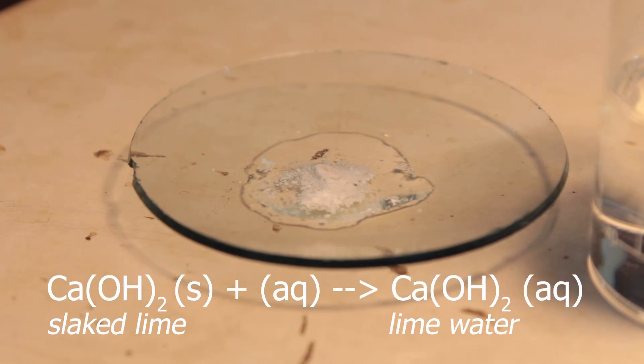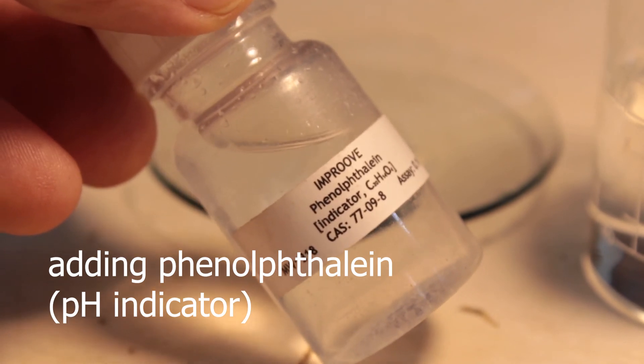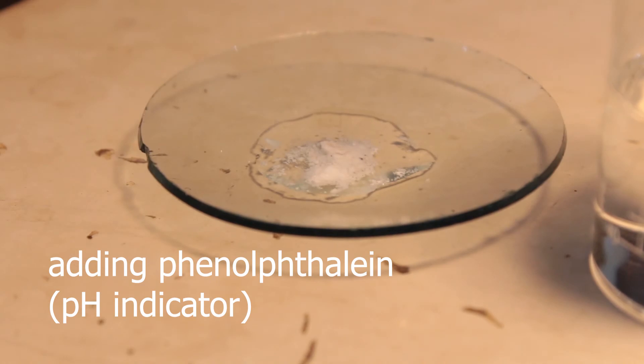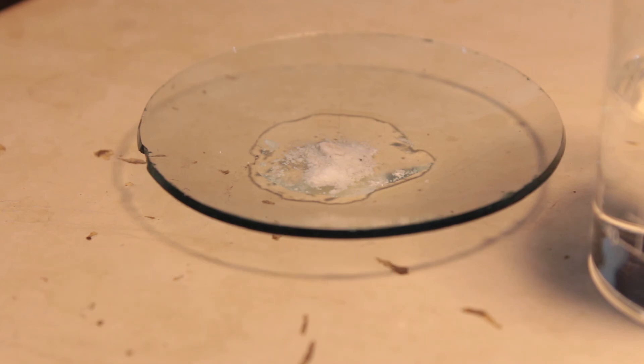But calcium hydroxide is soluble, and now I'm demonstrating it. Adding phenolphthalein indicator to check alkalinity. Calcium hydroxide should be alkaline. Phenolphthalein indicator is colorless in acidic conditions and pink in alkaline.